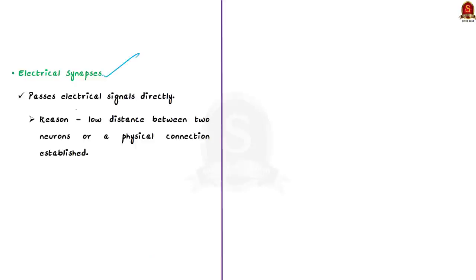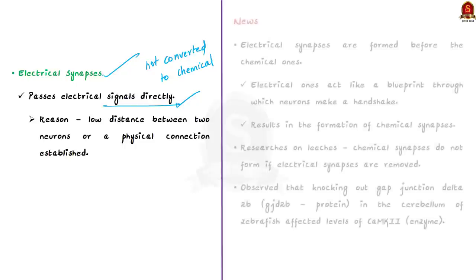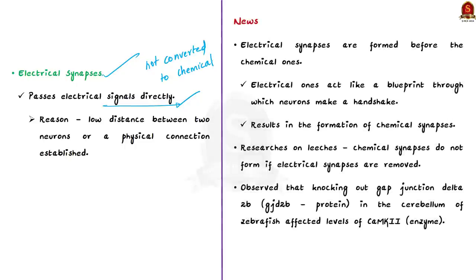In an electrical synapse, the electrical signals are passed directly — there is no need to convert them to chemicals. This happens because the distance between the two neurons is low, or the neurons establish a physical connection. Because of this, the electrical signal is not converted to chemicals, and there is no delay in communication — it is faster. This is the basic understanding you should have about synapses and neurons and how signals are transmitted.